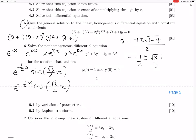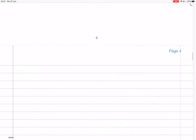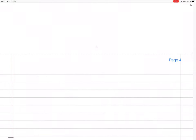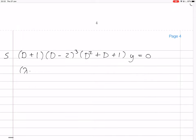So let's write that down. D plus 1, D minus 2 cubed, D squared plus D plus 1, y. So our equation is D plus 1, D minus 2 cubed, D squared plus D plus 1, y equals 0. So the auxiliary polynomial is lambda plus 1, lambda minus 2 cubed, lambda squared plus lambda plus 1.